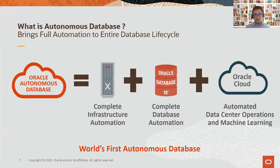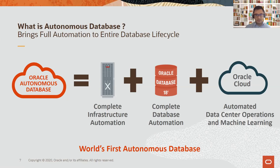Each component has its own importance. Exadata is hardware built specifically for the database. The Oracle database has more than 30 years of feature development and automations, brought fully automated to market. OCI contributes with its powerful tools, scripts, and machine learning algorithms to govern it all. At this point, autonomous database is only part of the OCI Oracle Cloud.